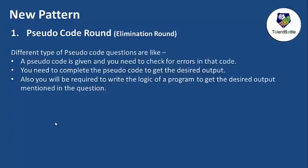The first round is the pseudo code round, which is an elimination round — you need to crack this to proceed. Different types of pseudo code questions include: checking for errors in a given pseudo code, completing a pseudo code to get a desired output, and working with code snippets. You may also be required to write the logic of a program to get a desired output. This is the main hurdle you need to clear to advance to further rounds.